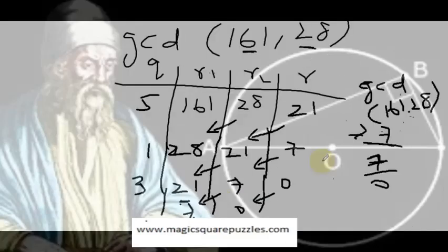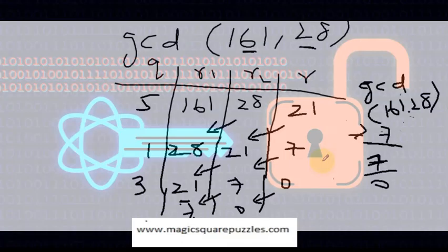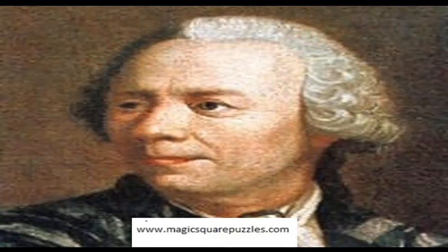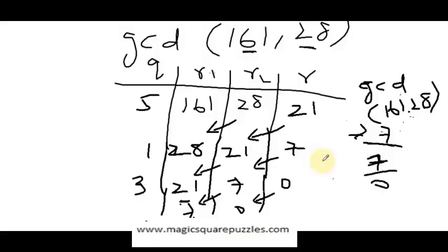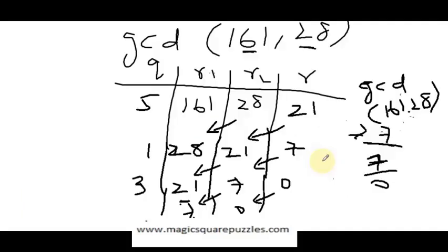The reason we are studying this is that we are going to explore a beautiful concept called public key cryptography. To understand public key cryptography, we need to understand GCD, Euler's totient function, and concepts related to prime numbers. We will follow this up with the totient function and then move into public key cryptography.